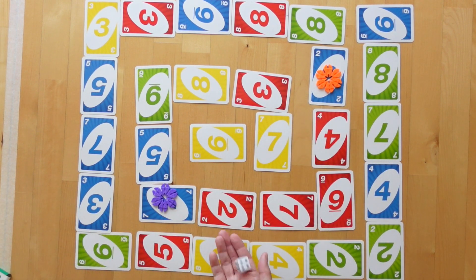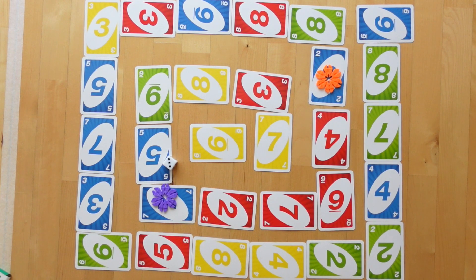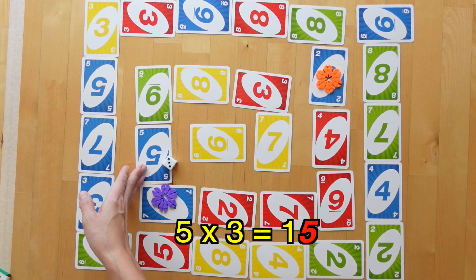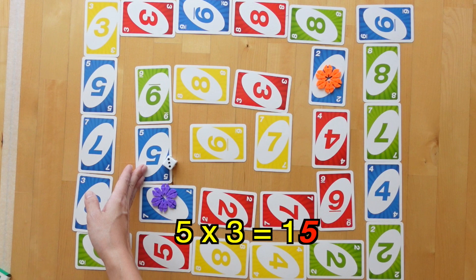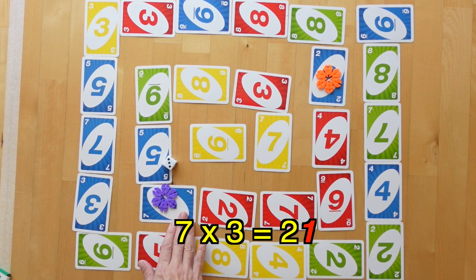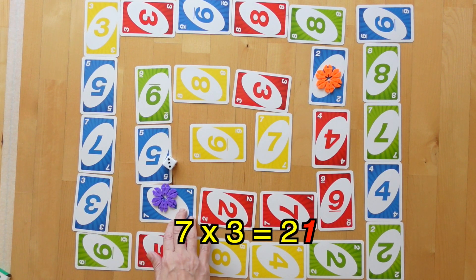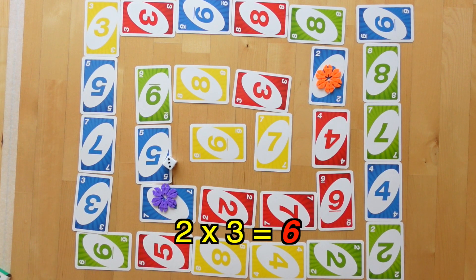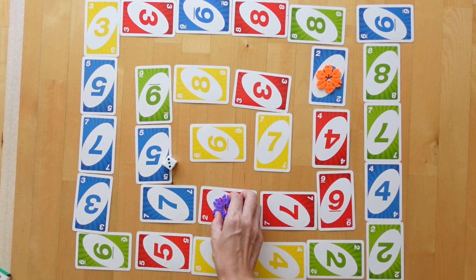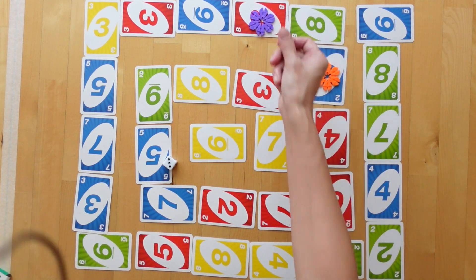Now it's purple player's turn. She has rolled a 3. She can move 15 steps if she outruns 5, 1 step if she outruns 7, or 6 steps if she outruns 2. So she will move 6 spaces. 1, 2, 3, 4, 5, 6.